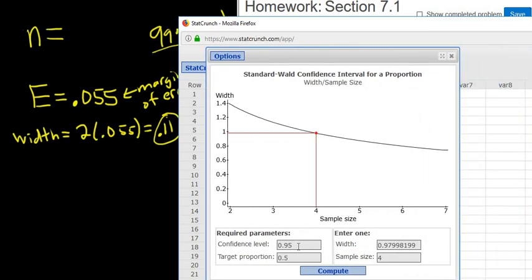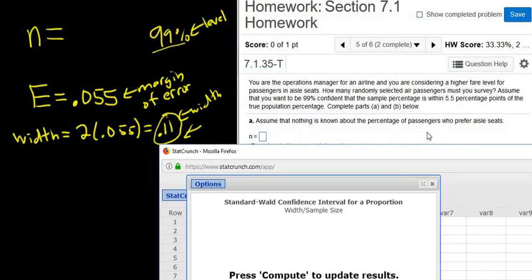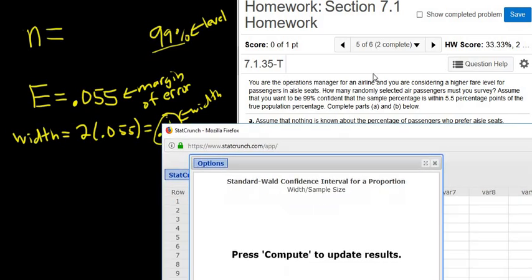Then you enter the level. The level in this case was 99. We leave the target proportion alone. It's what we expect. We know no information, so we expect nothing. It tells us, assume that nothing is known about the percentage of passengers who prefer aisle seats.